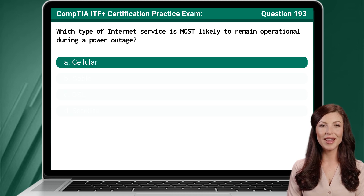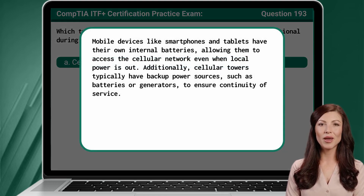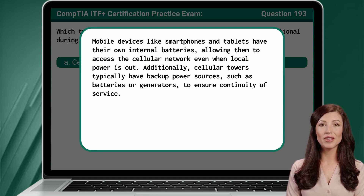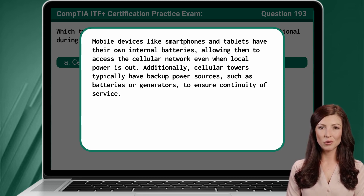The answer is A: Cellular. Mobile devices like smartphones and tablets have their own internal batteries, allowing them to access the cellular network even when local power is out. Additionally, cellular towers typically have backup power sources, such as batteries or generators, to ensure continuity of service.